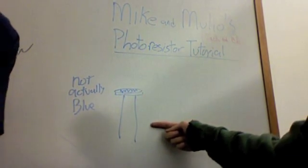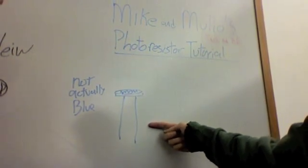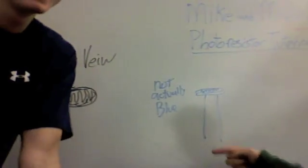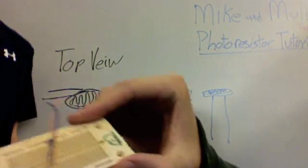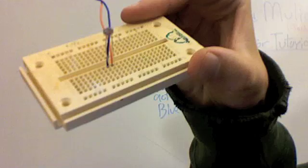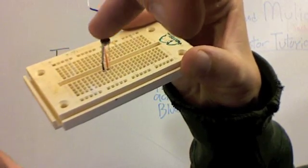Here we have our photoresistor. Ours isn't blue. And here this is what it looks like from the top, and this is what it looks like when it is really tiny, attached to our breadboard. This little bit right here.